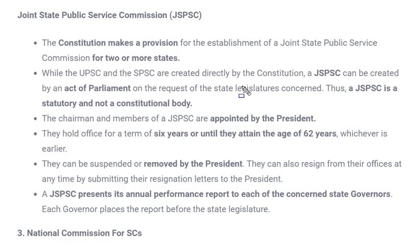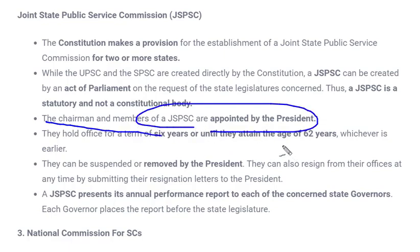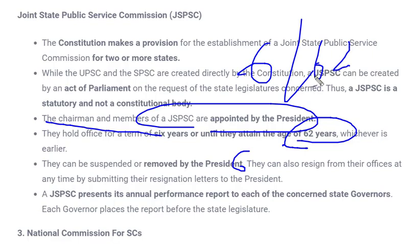The next constitutional body is the Joint State Public Service Commission. By the name itself it is clear: if recruitment is required in more than one state and those states are not able to form their own state public service commission, the Constitution has a provision to form a Joint State Public Service Commission. Two or more states are combined and can use this body to recruit their civil services. Chairman and members are appointed by the President. Here, the maximum age is 62 years or six years tenure, whichever comes first — unlike the 65 years in UPSC and Election Commission. Removal can be done by the President on certain grounds.